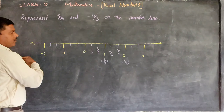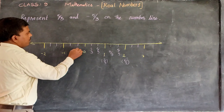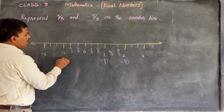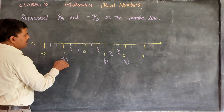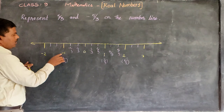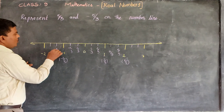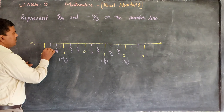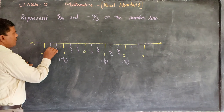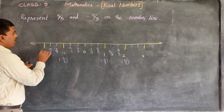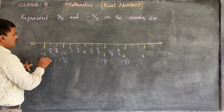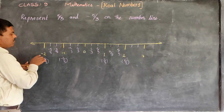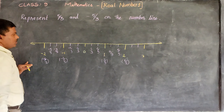Similarly, on this side: this is minus 1/3, this is minus 2/3, this is minus 3/3. Minus 3/3 is nothing but minus 1. And this is minus 4/3, this is minus 5/3, and this is minus 6/3. Minus 6/3 is nothing but minus 2.